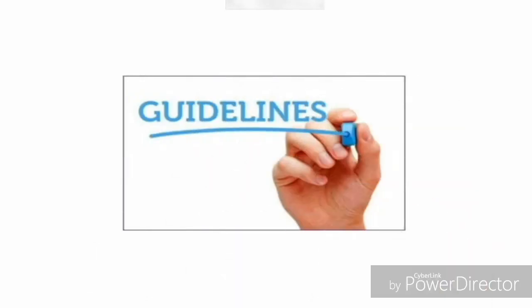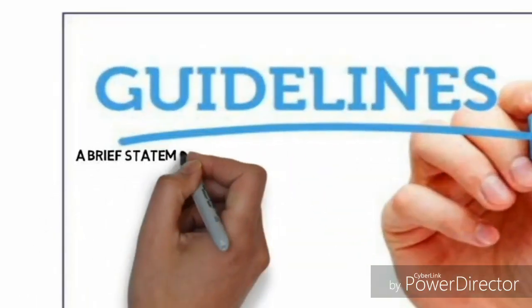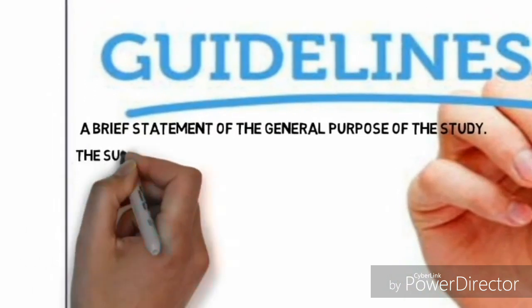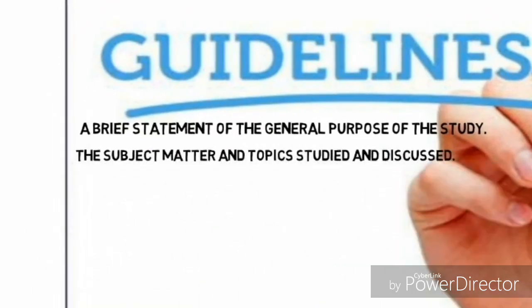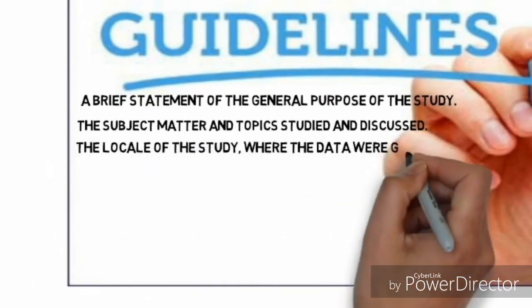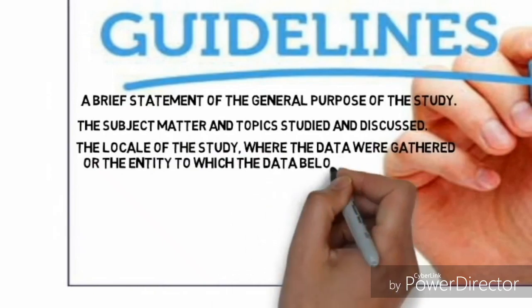Here are some guidelines in writing it. A brief statement of the general purpose of the study. The subject matter and topics studied and discussed. The locale of the study, where the data were gathered and the entity to which the data belong.